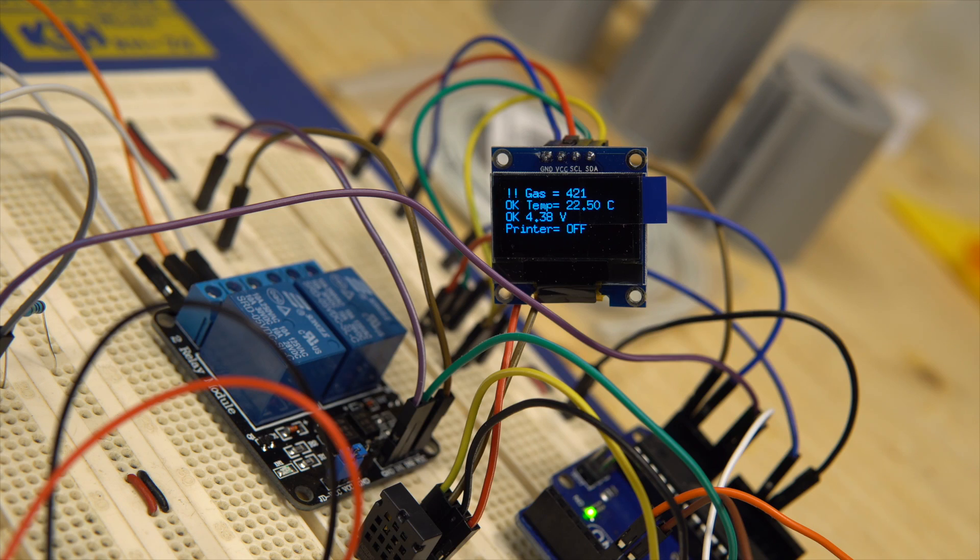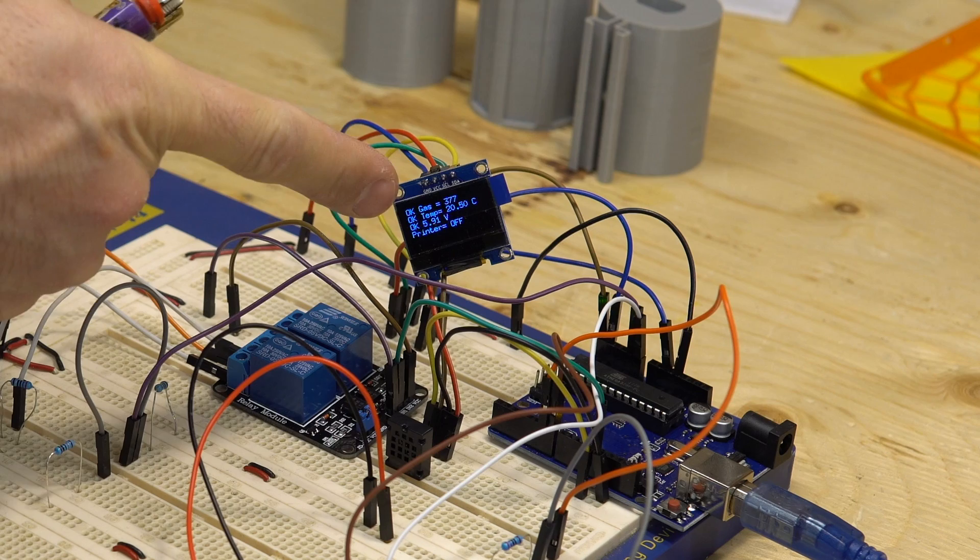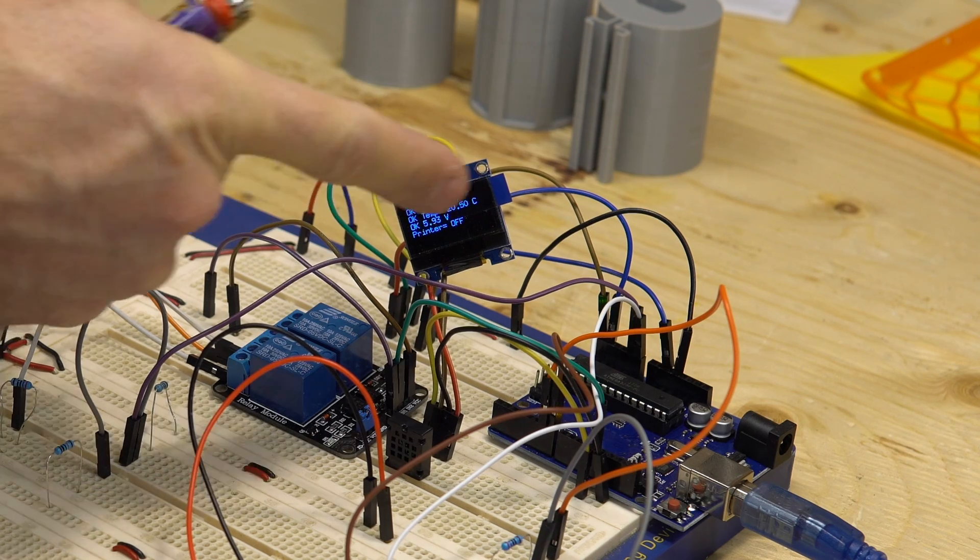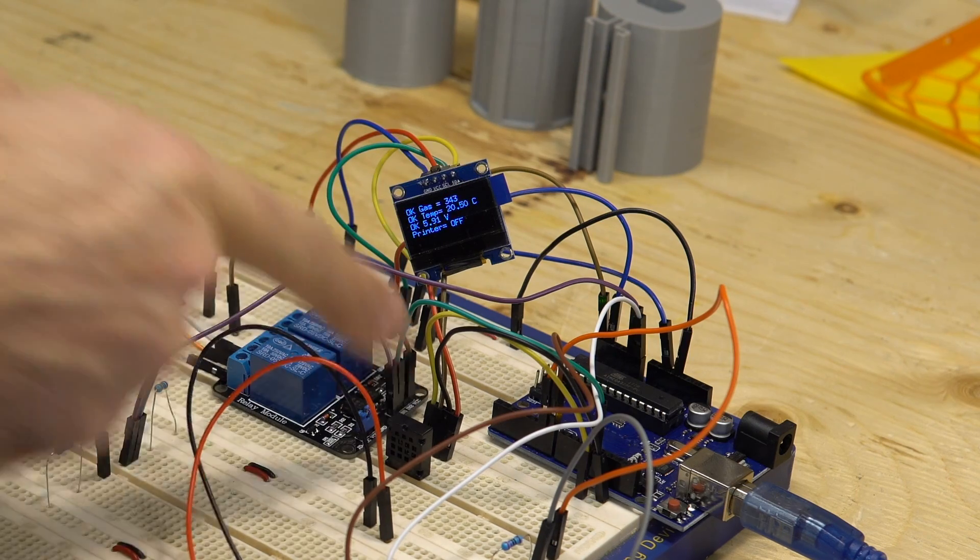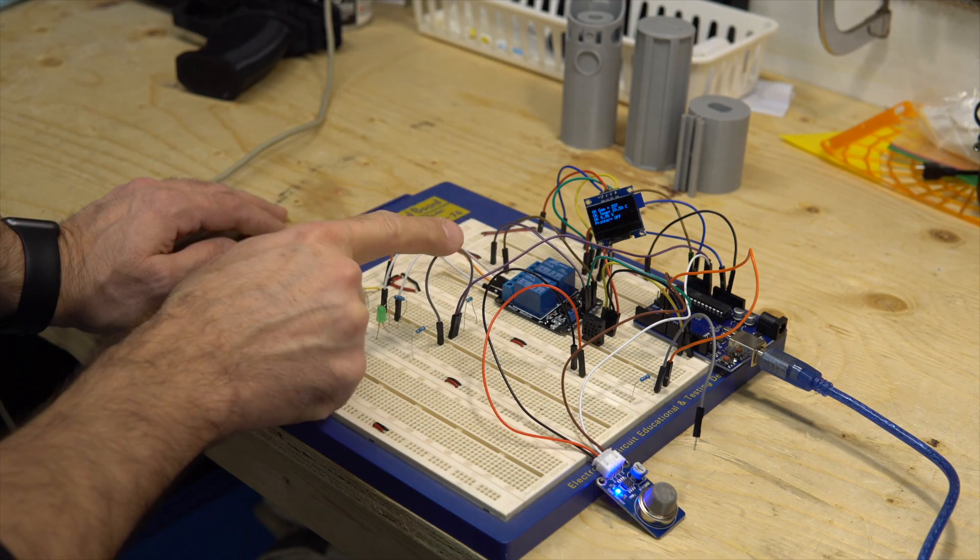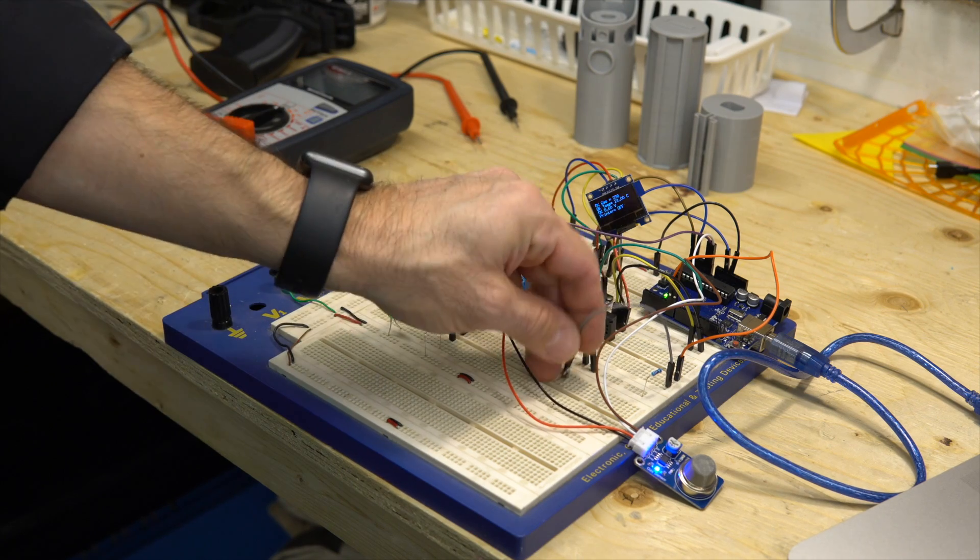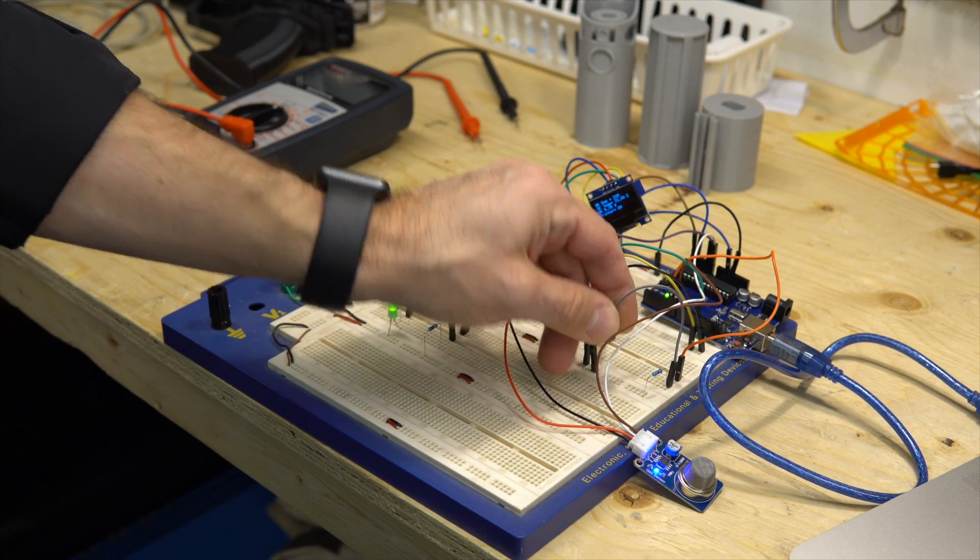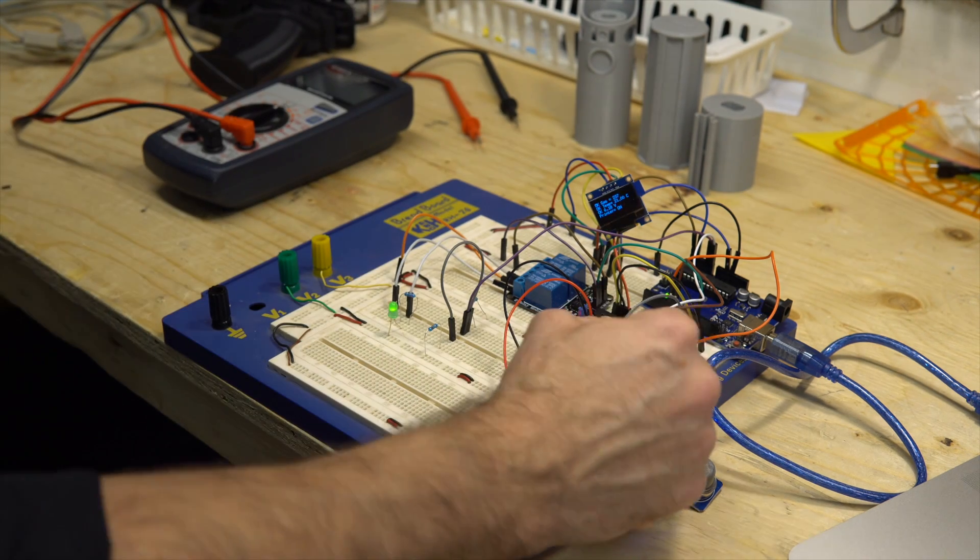So you have statuses of the gas sensor with okay and the reading that is done, and the temperature and the reading of this temperature sensor, and the voltage that is read here, and the printer status. So if I push the button the printer comes on, and if I push the button again nothing happens.